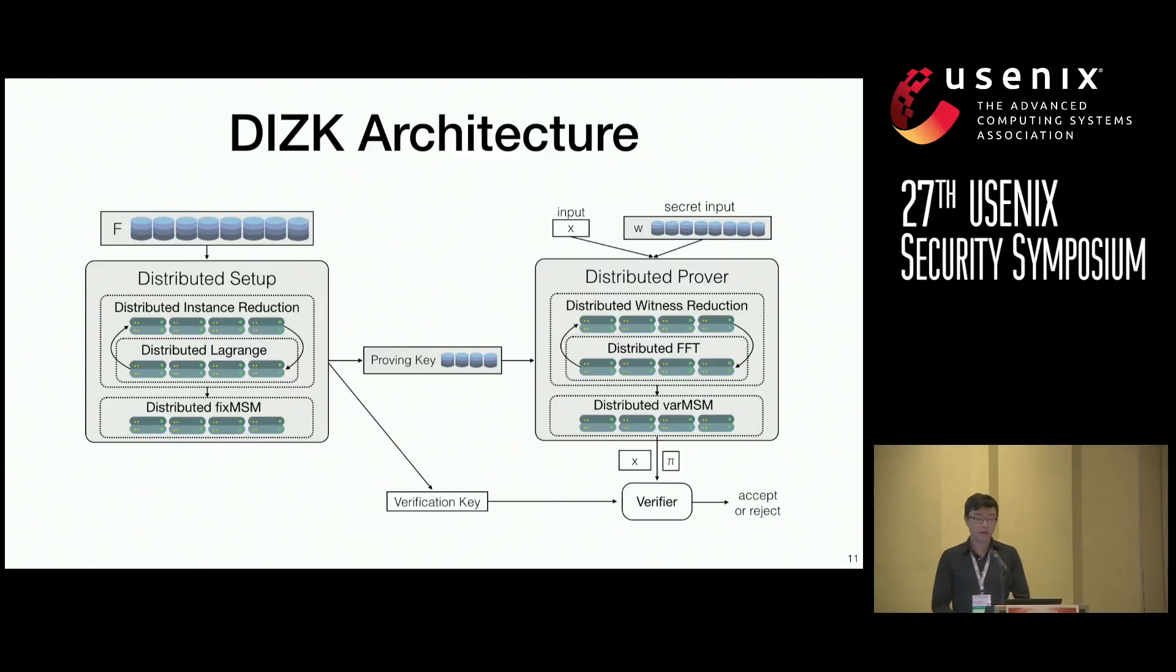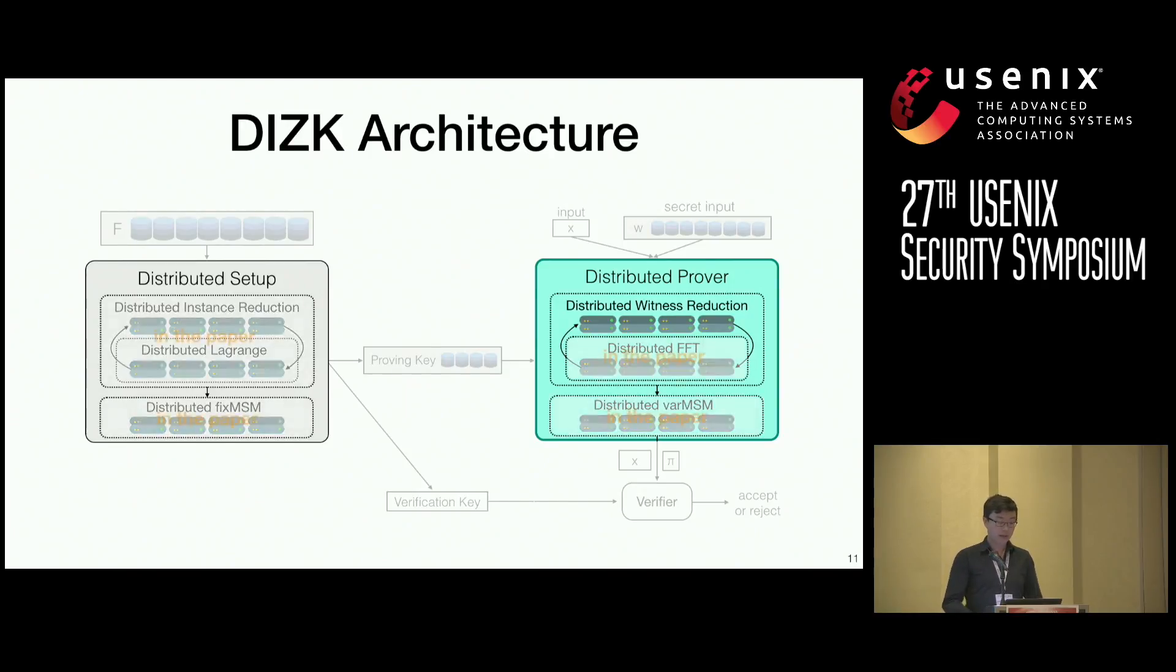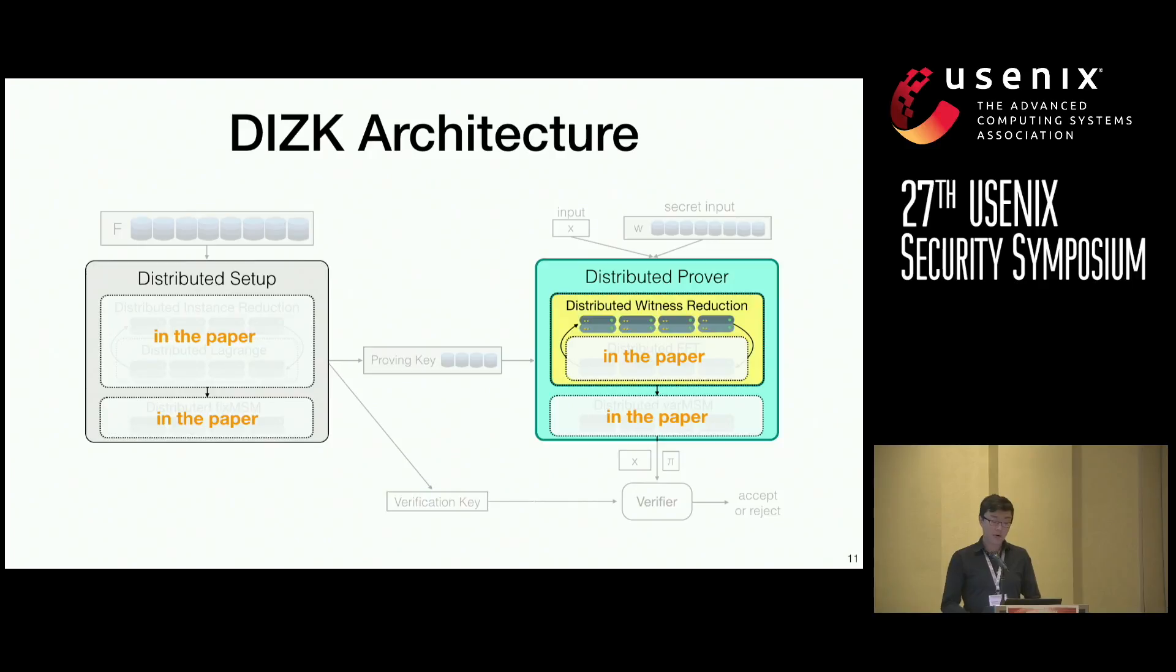For the sake of time today, I want to focus on one critical part of our system, and that's the distributed prover. You'll find detailed explanations for all of our techniques in the paper. And today I want to discuss one critical component in our system, that is the witness reduction. I will go over our thought process for distributing this, and also show you some of the few off-the-shelf approaches to computing the reduction. And lastly, show you the tailored approach that we used to make the witness reduction itself both scalable and parallel.